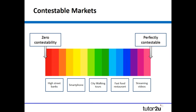If we give students that spectrum and explain the definition of contestability — with sunk costs as one of the main examples of barriers to exit — and give them five different industries or businesses, where would they place them on that spectrum? Before they've learned anything else about contestability, let's test what they know about those markets based on the idea of freedom of entry and exit and sunk costs. Give them a few minutes, and we'll test the same exercise at the end to see whether their answers change after covering the other concepts.